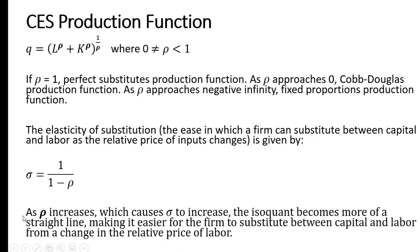And as we're going to see, as rho increases, which causes the elasticity of substitution or sigma to increase, the isoquant becomes more of a straight line, making it easier for the firm to substitute between capital and labor from a change in the relative price of labor.